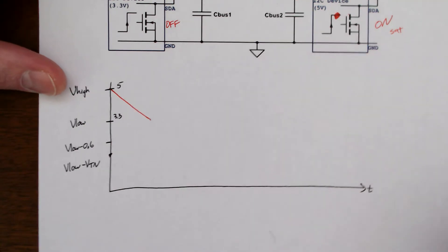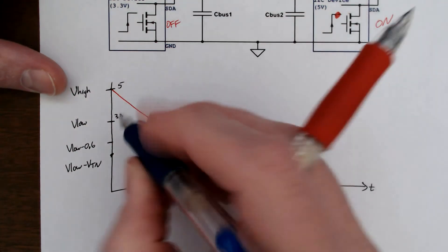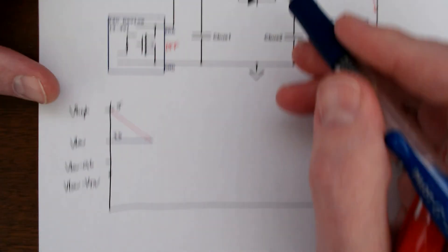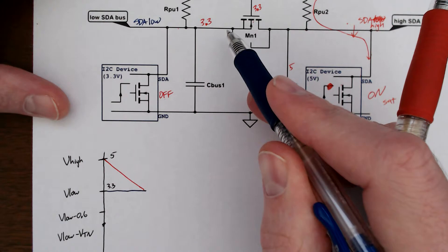At the same time, SDA low is staying the same. Nothing has happened on the left side of this circuit. The transistor is off.